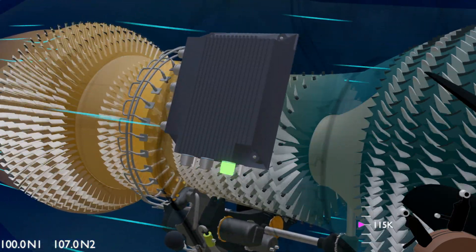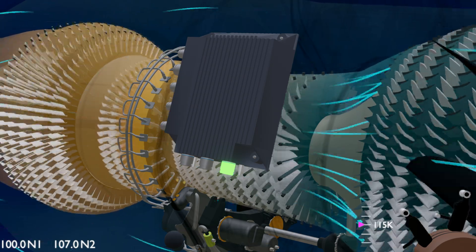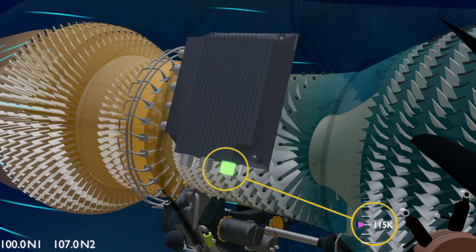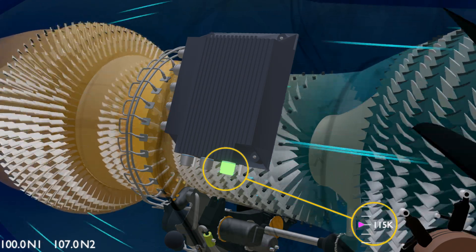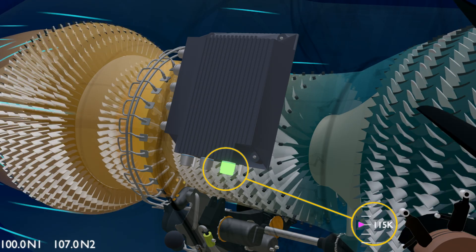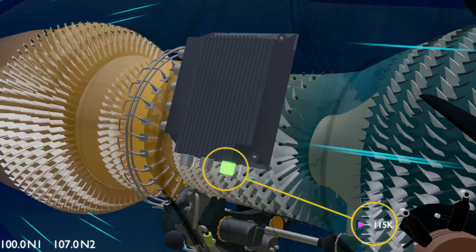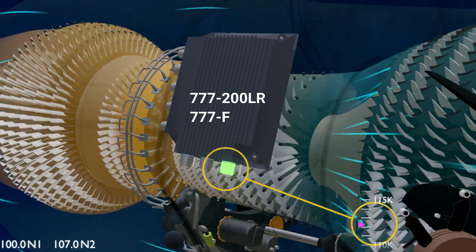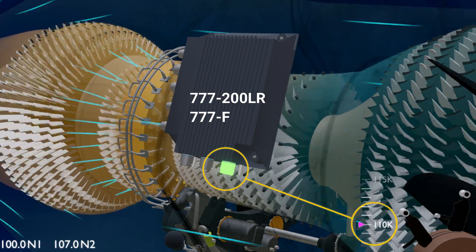To achieve this the EEC is fitted with a thrust rating plug. The rating plug programs the software in the EEC to limit the engine thrust to 115,000 pounds. The EEC software will now ensure the engine does not go beyond this rating. The same engine can be installed on the other types of the Boeing 777 aircraft by changing the rating plug that limits the maximum thrust.